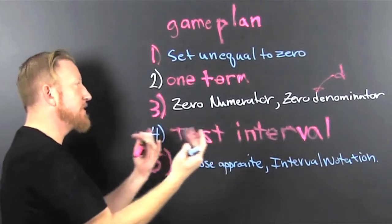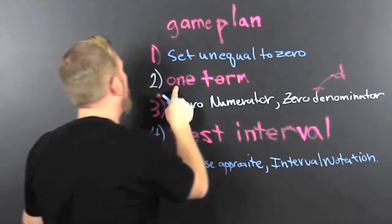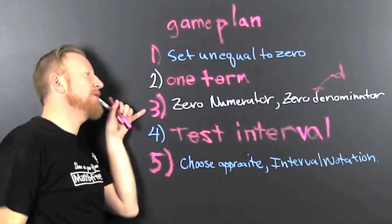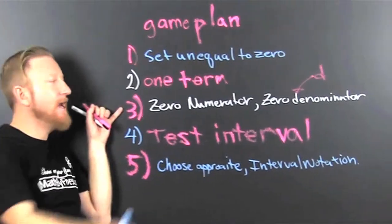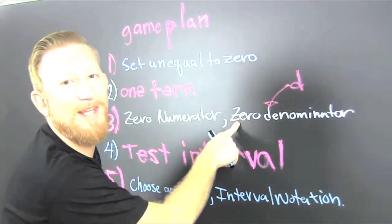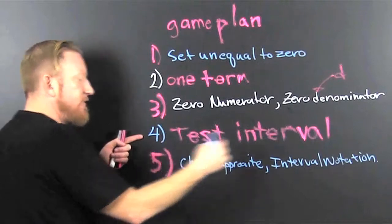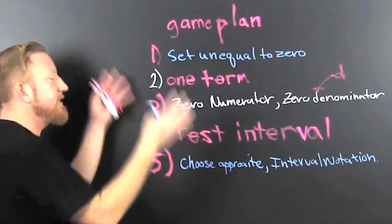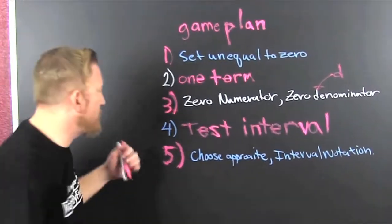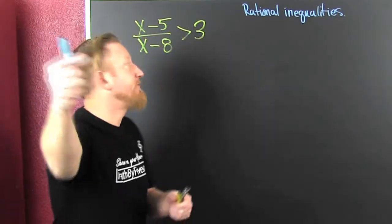We first want to set it equal to zero. Then we need one term. Then we get the zeros of the numerator and the denominator. And then we're going to test the intervals in between the critical values.